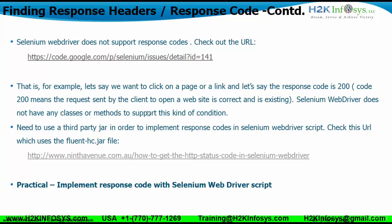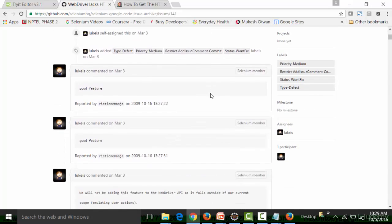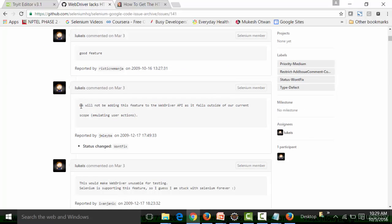Selenium does not have any classes or methods to support response code behavior. If you want the condition where only a response code of 200 triggers a link click, Selenium WebDriver API cannot meet that requirement. So we use a third-party jar file to implement response code behavior in Selenium WebDriver scripts. You can look at a particular website that confirms the WebDriver lacks HTTP response header and status code methods.